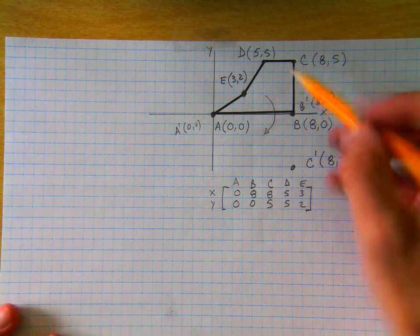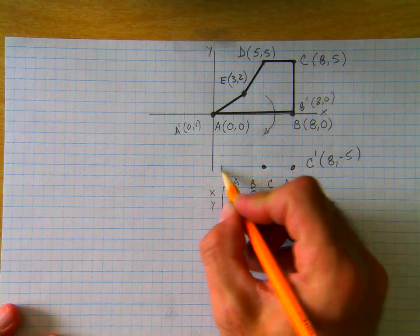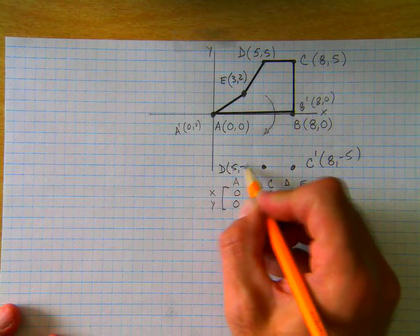And then point D, 5, 5, becomes point D prime, and it's 5, negative 5.